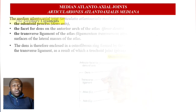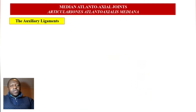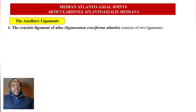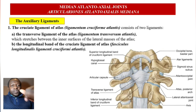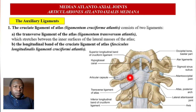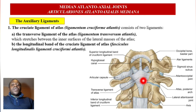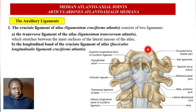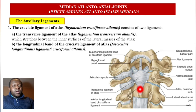The auxiliary ligaments: the first is the cruciate ligament of the atlas, ligamentum cruciforme atlantis. This ligament consists of: the transverse ligament of the atlas, ligamentum transversum atlantis, which stretches between the inner surfaces of the lateral masses; and the longitudinal band of the cruciate ligament, fasciculus longitudinalis ligamenti cruciformis atlantis — which has two parts: the superior longitudinal band and the inferior longitudinal band of the cruciform ligament.